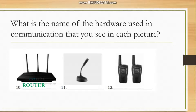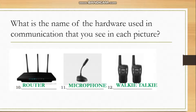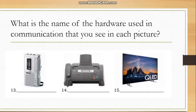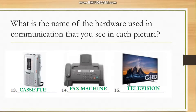This is quite similar to a modem, but this is a router. Number eleven — it's a microphone. Number twelve — it's a dual walkie-talkie. Number thirteen — do you have this at home? It's a cassette. It has a small tape — it's like a small radio, but it's called a cassette. Number fourteen — it's a fax machine. And number fifteen — it's a television, of course.